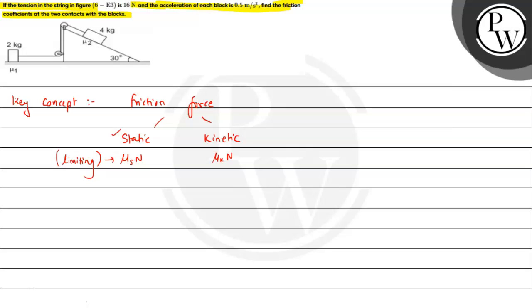Now we can make a free body diagram. Let's suppose this is our 2 kg block. This block has a tendency to move towards right so this will have friction force towards left and it will be μ1 into N where N is the normal reaction. The weight is Mg which is 2 into g.